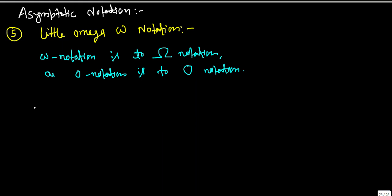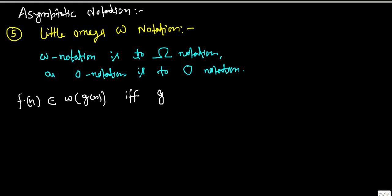We will be using little-omega notation to denote a lower bound that is not asymptotically tight. One way of defining this is: f(n) belongs to little-omega of g(n) if and only if g(n) belongs to little-o of f(n).